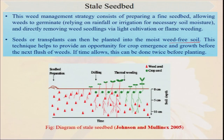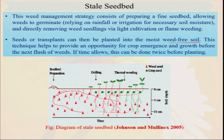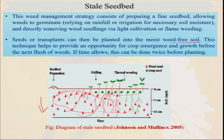Seeds are transplanted or planted into moist weed-free soil. This technique helps to provide an opportunity for crop emergence and growth before the next flush of weeds. The majority of weed seeds are present in the lower layer, but whenever we have done some seedbed preparation or plowing, this weed seed comes to the surface layer. So immediately after that, some rainfall causes these weeds to germinate. When the majority of weed seeds germinate and we kill them, and we subsequently grow our crop, the weed population will be less and our crop will be high.